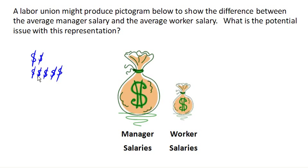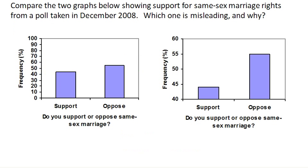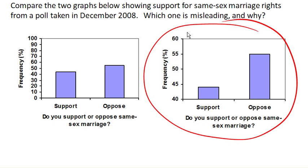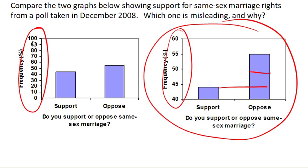Let's look at one more, and this is a big problem with bar graphs. Notice these two graphs here — these are two graphs from a poll about same-sex marriage rights taken in December 2008, and they look quite different. The misleading one has a vertical axis condensed from 40 to 60, which creates a misleadingly large disparity. This bar now looks three times bigger than this bar, whereas if we actually look at it measured from zero, we can see that the difference is much smaller than this graphic would lead us to believe.